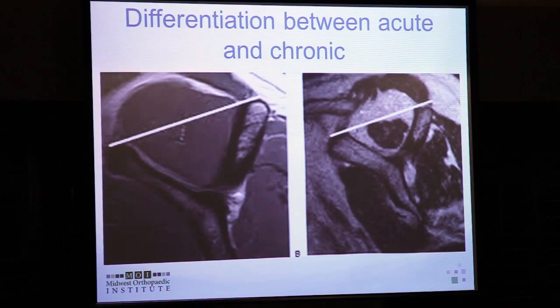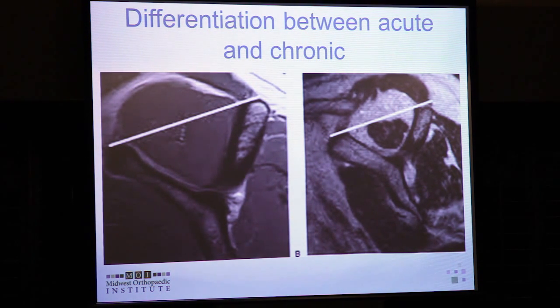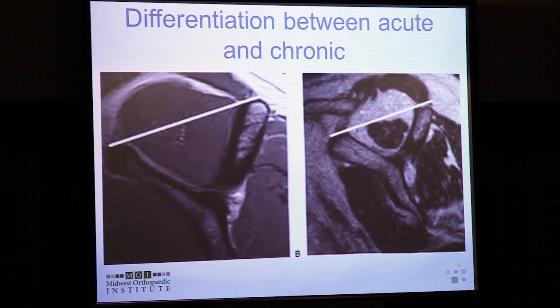The medial sagittal imaging on MRI is very helpful. A very substantial supraspinatus muscle on a medial sagittal cut indicates a healthier circumstance. In contrast, a very small supraspinatus with a lot of fat and fibrosis surrounding it indicates a more chronic situation — and the treatment may be different for these patients.